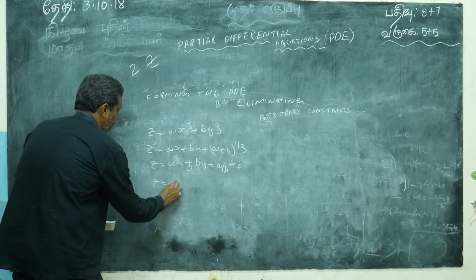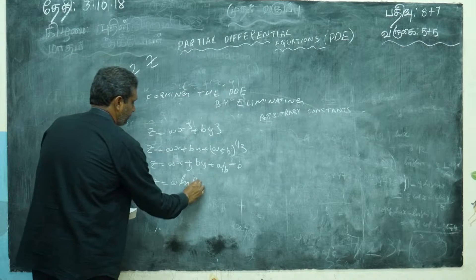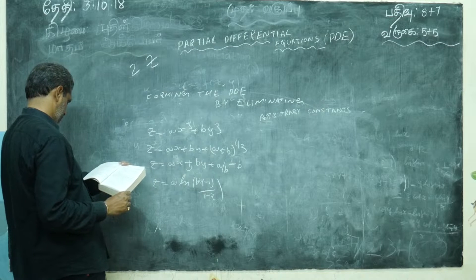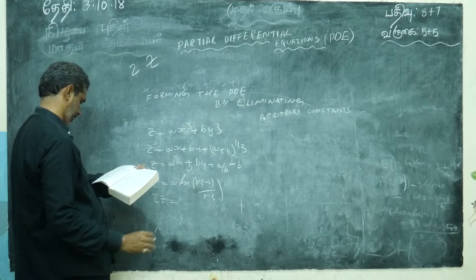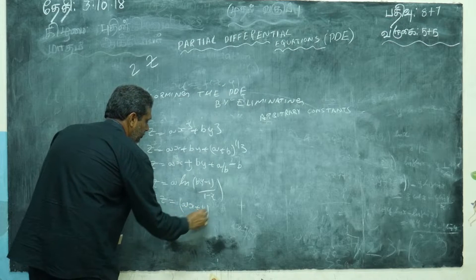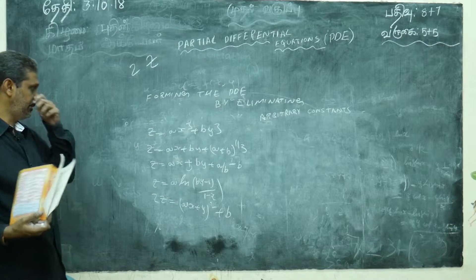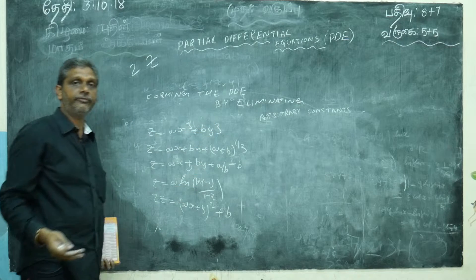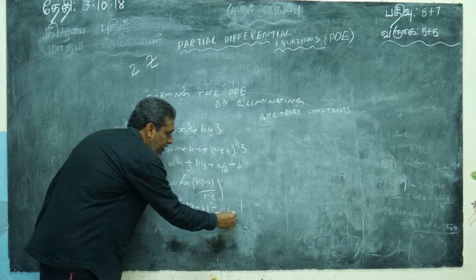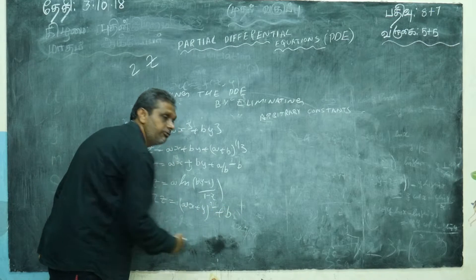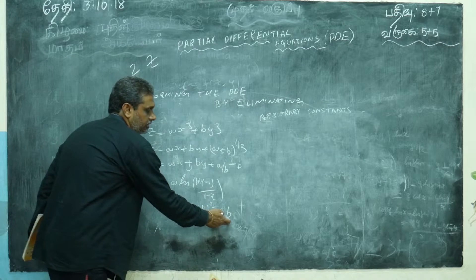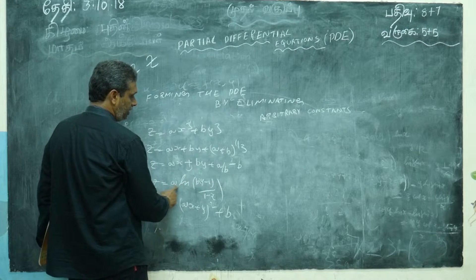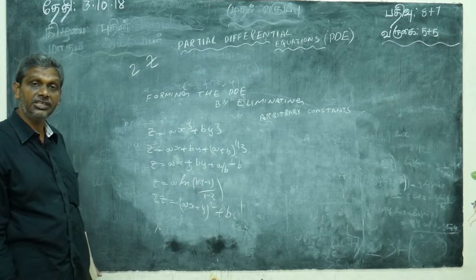There are also some very dangerous problems. For example: z = a·log(by − 1/(1−x)), and another: 2z = (ax + y)² + b. These are very dangerous problems. In previous problems, whatever constant was there — with ax or by — when I differentiate I can remove a and b nicely. But in these problems b has no variable attached to it. If I differentiate with respect to x, b won't remove; with respect to y also I cannot remove b. So in both cases we find the relationship differently.